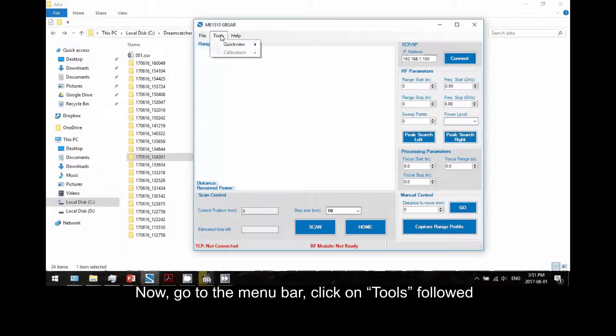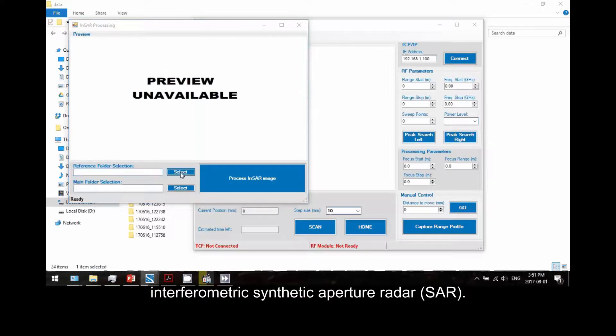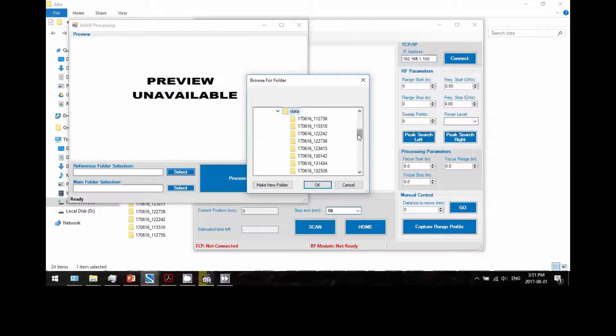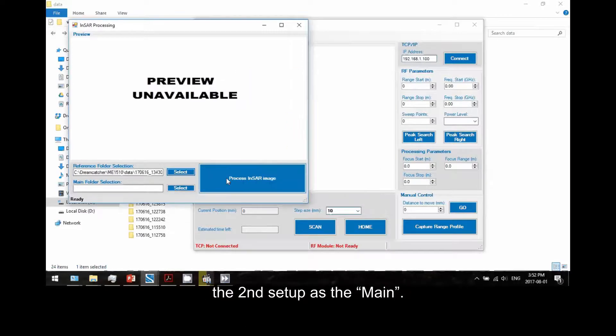Now go to the menu bar, click on Tools followed by Quick View InSAR Image, to display the interferometric synthetic aperture radar InSAR. Select the first setup as the reference and the second setup as the main.